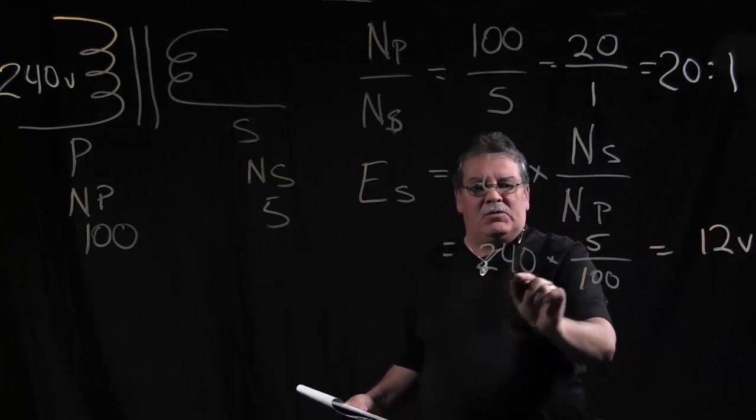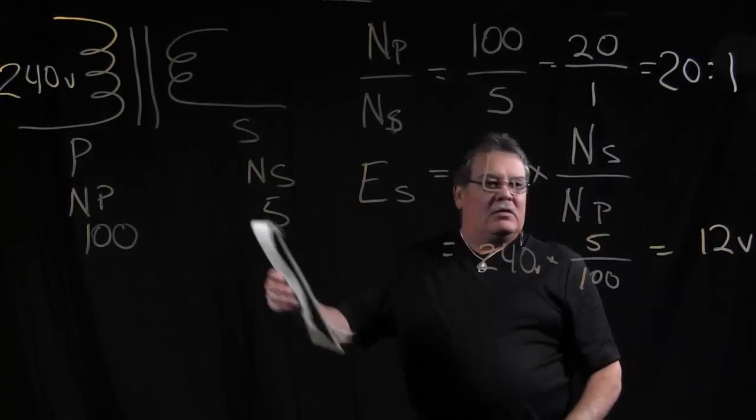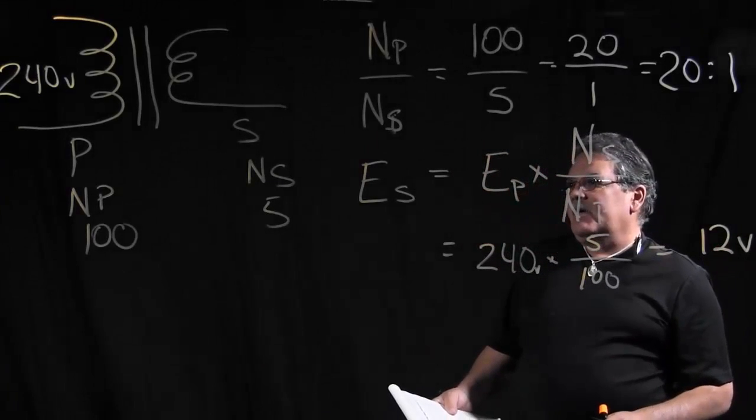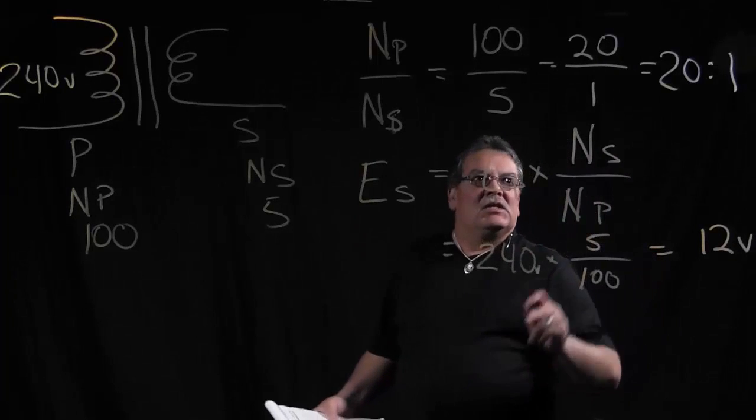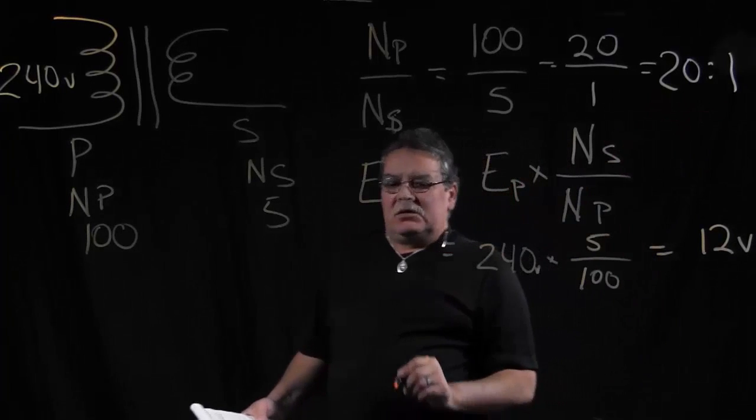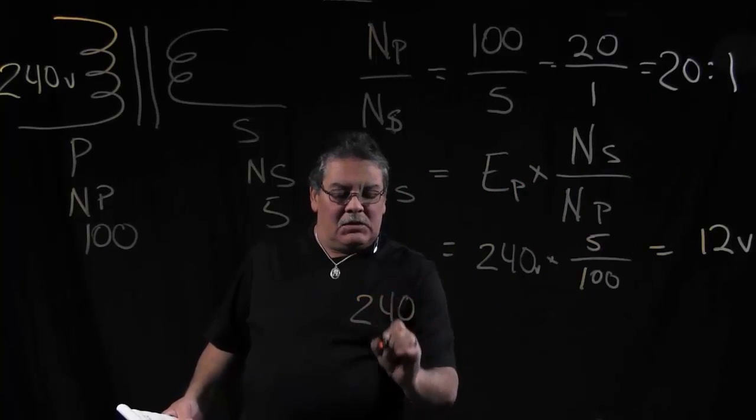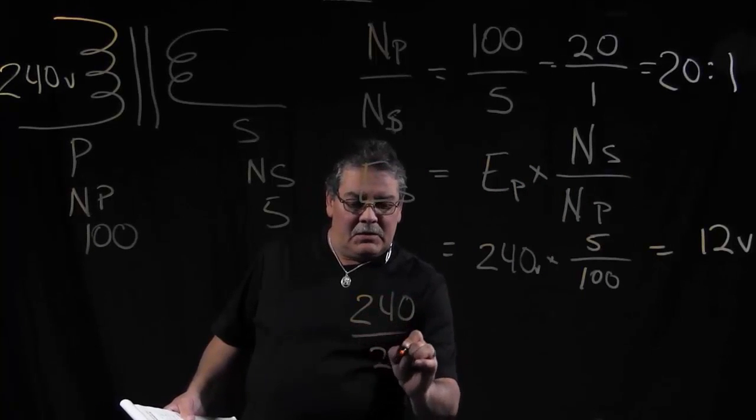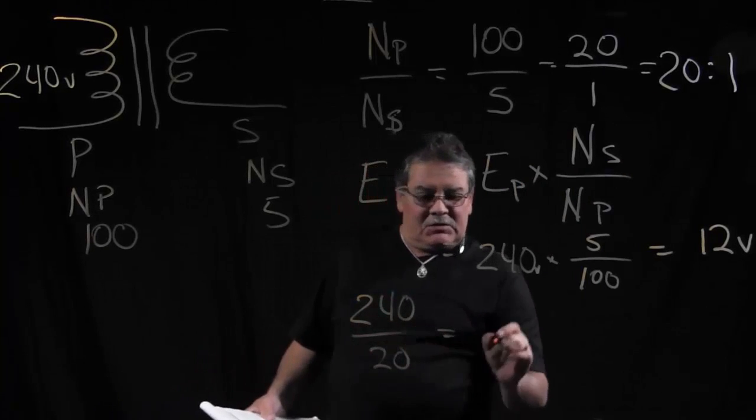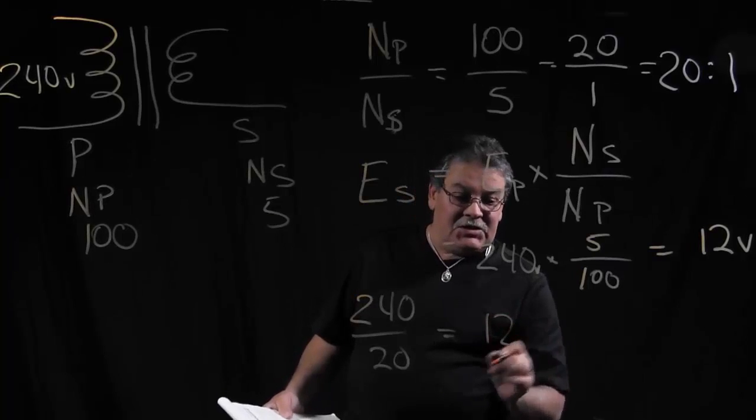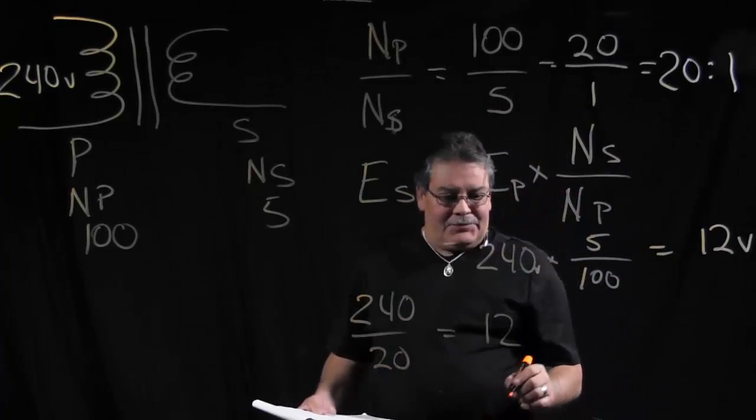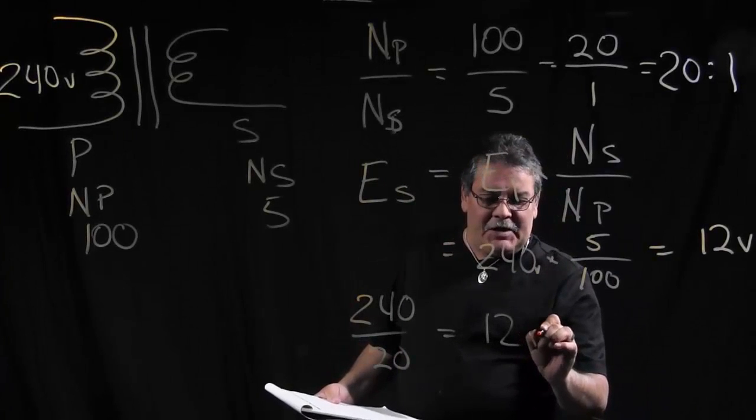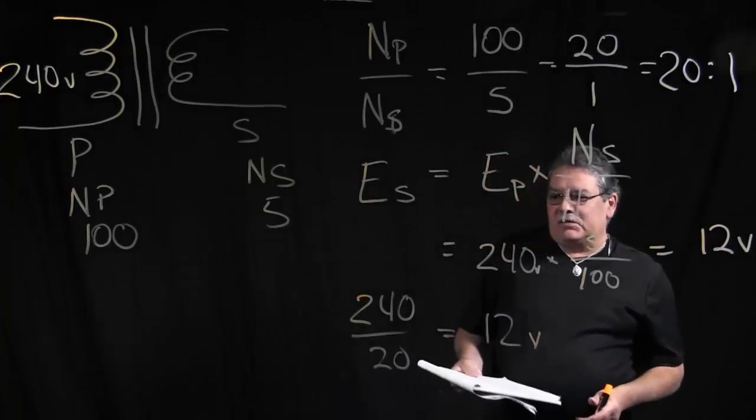So this demonstrates, we started off with 240 volts in the primary, and we have 12 volts in the secondary. A lot of times what I'll do is an easier way: we have a 20 to 1 ratio, so if we have 240 volts divided by 20, it comes out to 12. So that's an easier way to do it than a lot of this other stuff, but that's just one way that I figured out how to do it on my own.